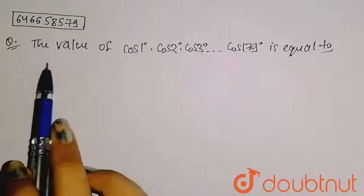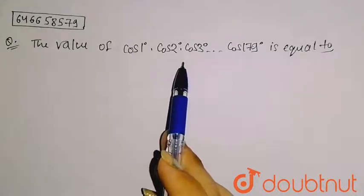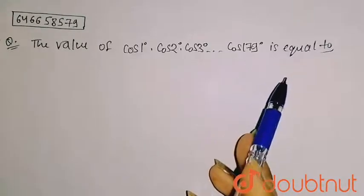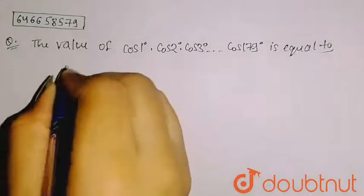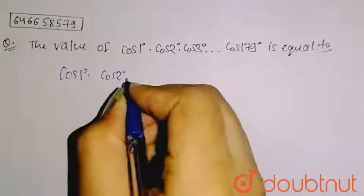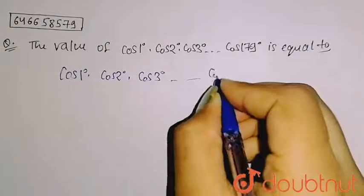It is given that the value of cos 1° · cos 2° · cos 3° · ... · cos 179° is equal to what. Now the given equation is cos 1° · cos 2° · cos 3° and so on, up to cos 179°.